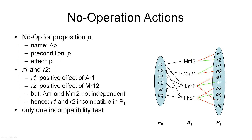Now, we will look at how we can simplify this by dropping the second case, by looking at what was currently missing from the planning graph — the no-op actions. We introduce no-op operations for a proposition P, named AP, and the purpose of these is to carry forward proposition P from one proposition layer to the next. They have one precondition — that P is true in the first proposition layer — and one effect making P true in the next proposition layer. In this example, we need six additional actions in action layer A1, one for each proposition symbol carried forward.